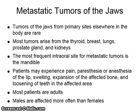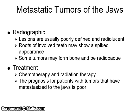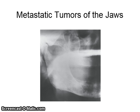Most patients are adults, and males are affected more often than females. Radiographic lesions are usually poorly defined and radiolucent. Roots of involved teeth may show a spiked appearance. Some tumors may form bone and be radiopaque. They are treated with chemotherapy and radiation. The prognosis for patients with tumors that have metastasized to the jaws is poor.